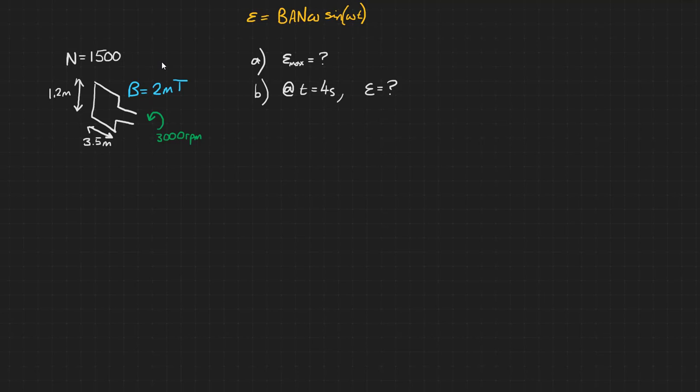Reminder again, make sure your calculator is in radians mode because we're going to be working with angular frequencies. First let's calculate a couple of values. Our area is going to be 1.2 multiplied by 3.5 which gives us 4.2 meters squared.